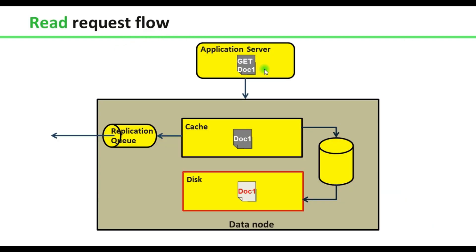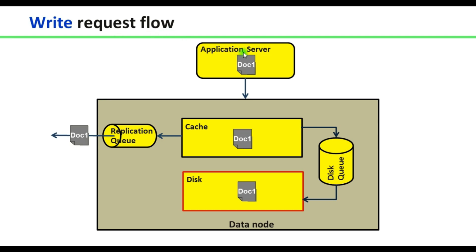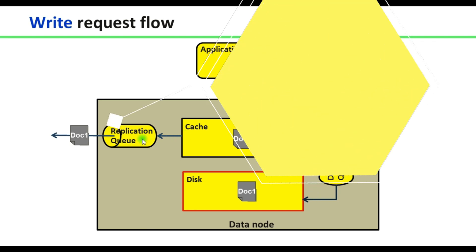Read request workflow: when an application requests data, it tries to get it from the cache first; if not available in the cache, it retrieves it from the disk. Write workflow: when an application inserts data, it is written to the cache first, then it goes to the disk queue, and from the disk queue it goes to the disk. In parallel, when data enters the disk queue, it also goes to the replication queue.